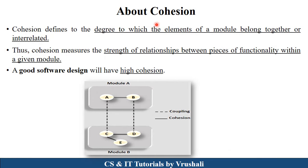The next topic is cohesion. In module A there are two classes A and B; in module B there are three classes C, D, and E. Class A of module A accessing information and methods of class C of module B is called coupling — that is interdependence. Cohesion is the opposite: it means access of information that is interrelated within the same module. Classes A and B within module A accessing each other's information and methods is called cohesion. As per the definition, cohesion defines the degree to which the elements of a module belong together or are interrelated. For good software design, you require high cohesion.